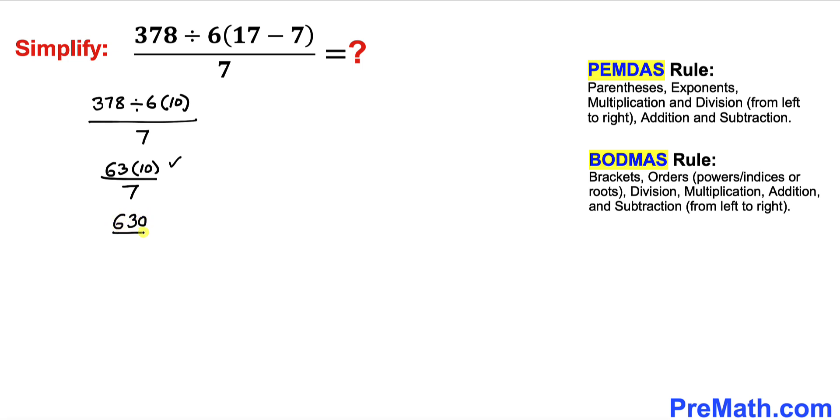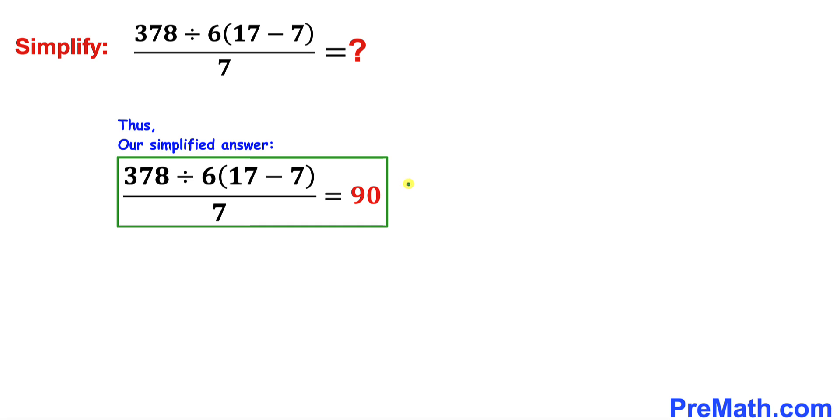630 divided by 7 is going to give us simply 90, and this is our correct approach in dealing with such kinds of problems. Thus, our simplified answer to this given problem turns out to be 90.